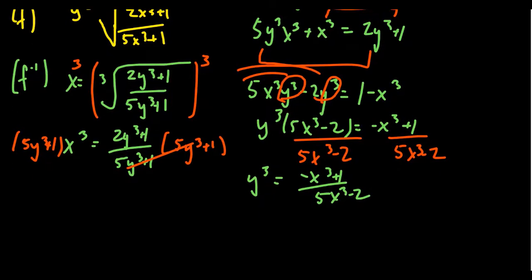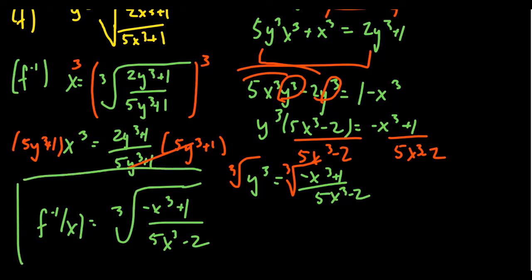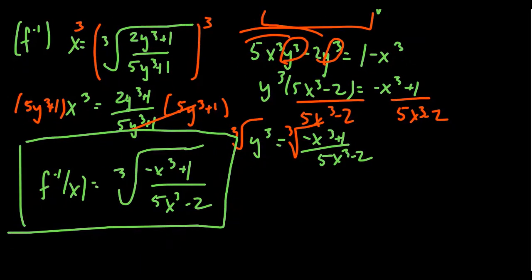To solve for y, take the cube root of both sides. In the end, we get f⁻¹(x) equals the cube root of (−x³ + 1) / (5x³ − 2). We went through all this effort and now have the inverse function. The inverse function wasn't actually our target — our target was the range of f. The range of f equals the domain of its inverse, f⁻¹.